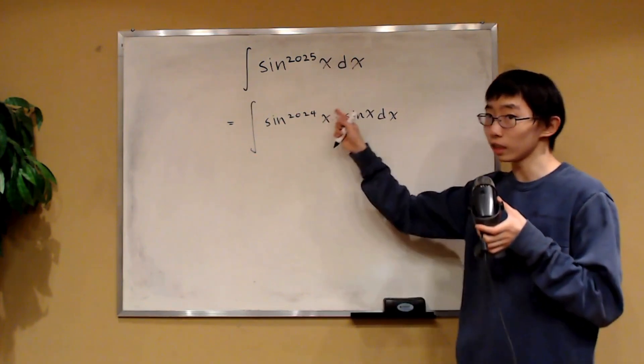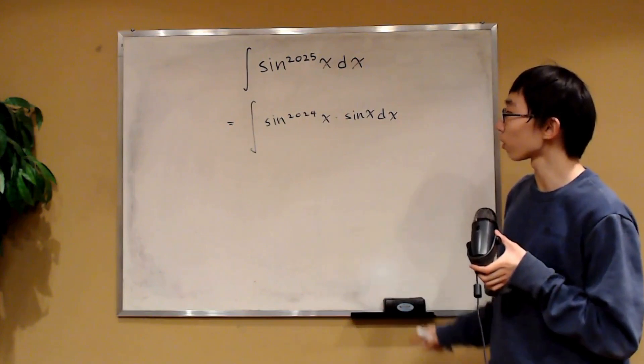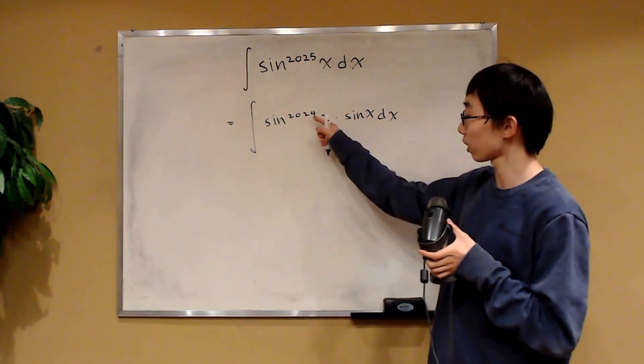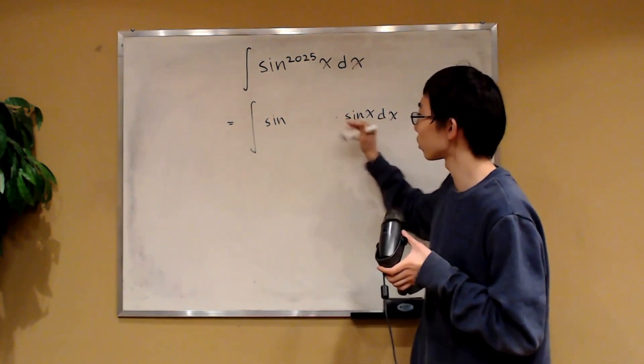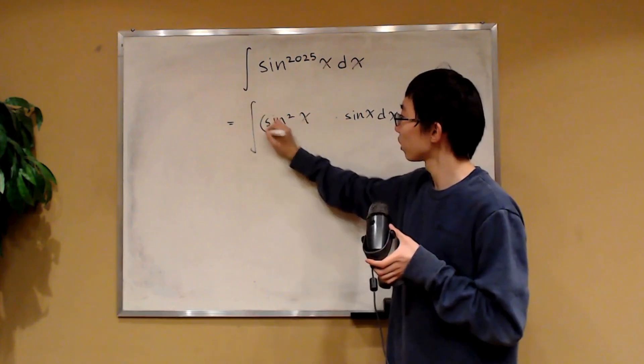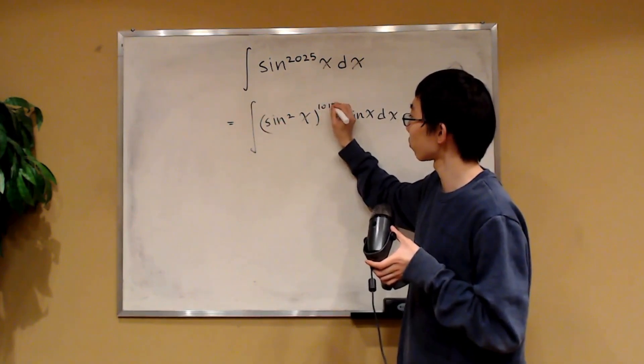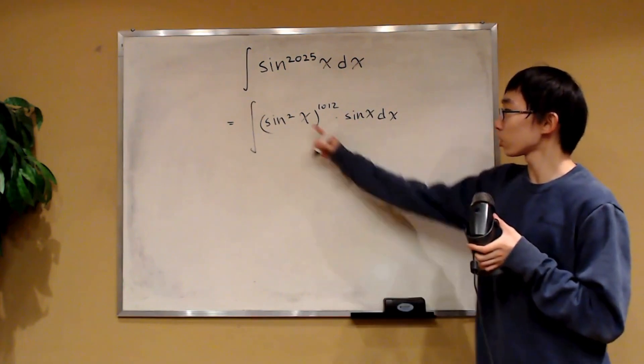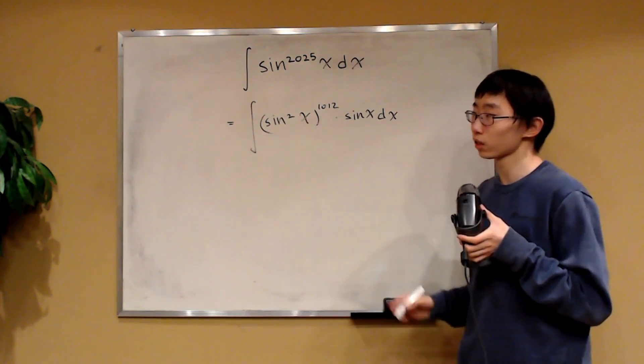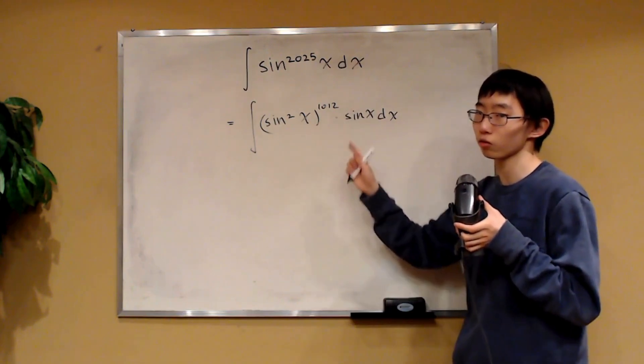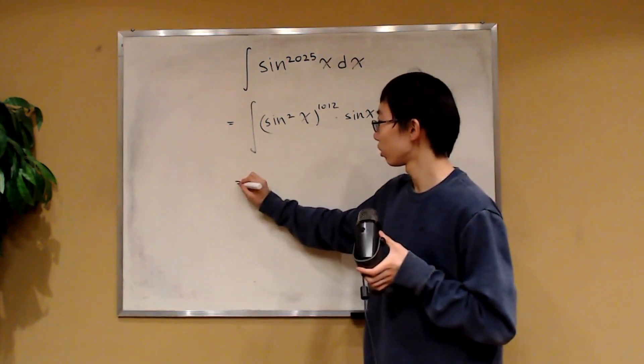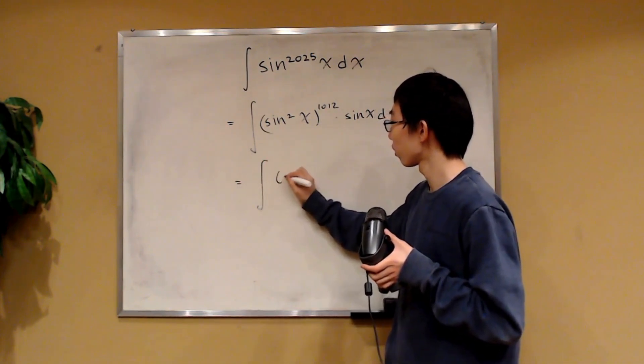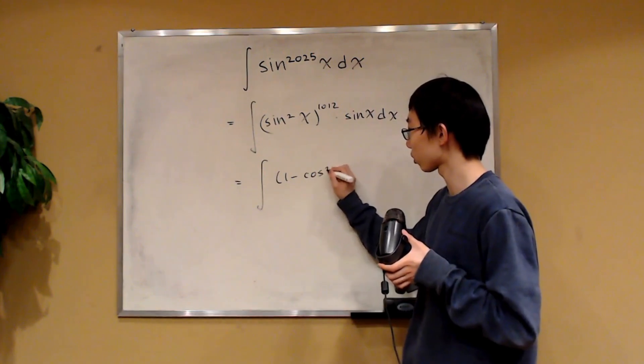Now, over here, this is an even power. And furthermore, notice that sine to the 2024 of x is equal to sine squared x to the 1012 power, times sine of x.